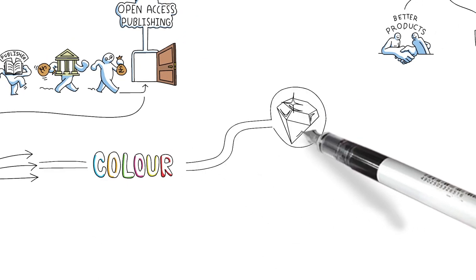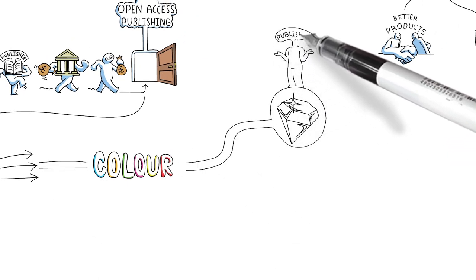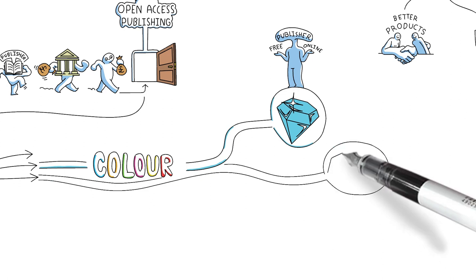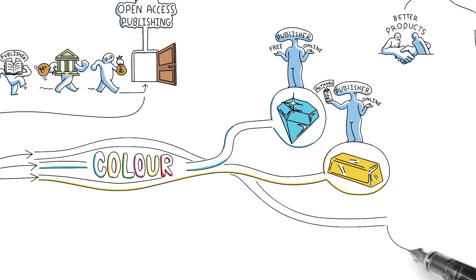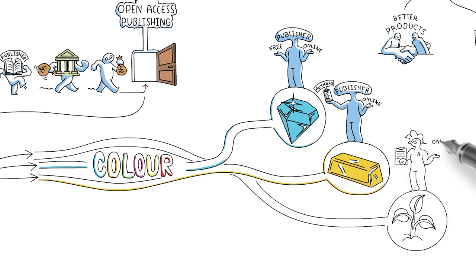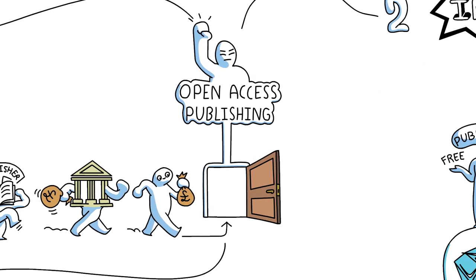Under the diamond route, the publisher makes the work freely available online. The gold route is similar, except the publishers charge the authors a fee. Under the green route, the publisher doesn't make the work open, but the researcher does, by posting their own copy of the final accepted work openly in an online repository elsewhere.